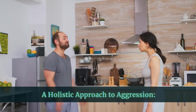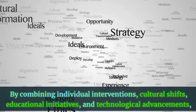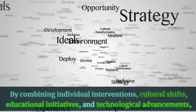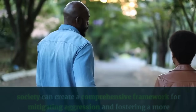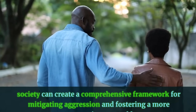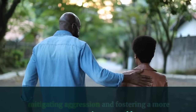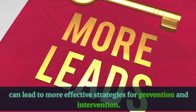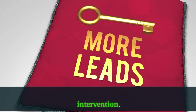A Holistic Approach to Aggression. By combining individual interventions, cultural shifts, educational initiatives, and technological advancements, society can create a comprehensive framework for mitigating aggression and fostering a more compassionate world. Interdisciplinary research and cooperation can lead to more effective strategies for prevention and intervention.